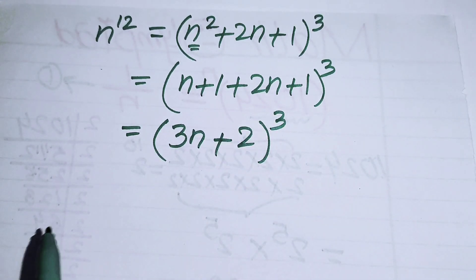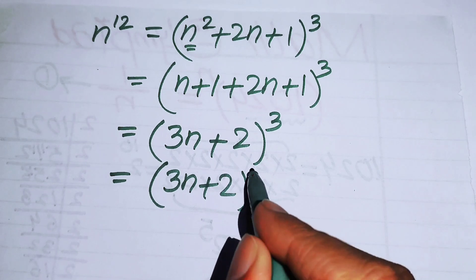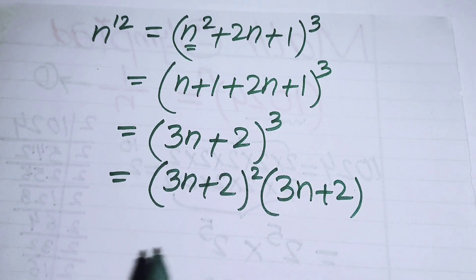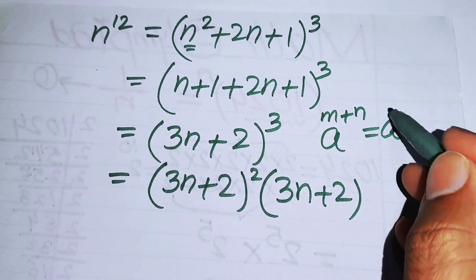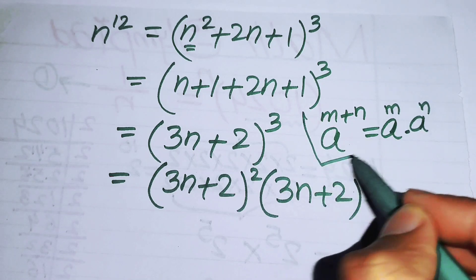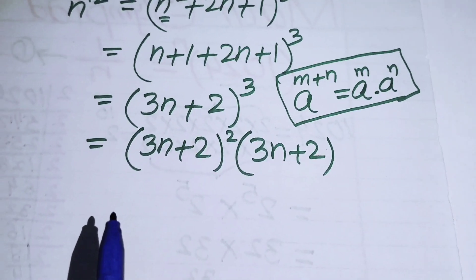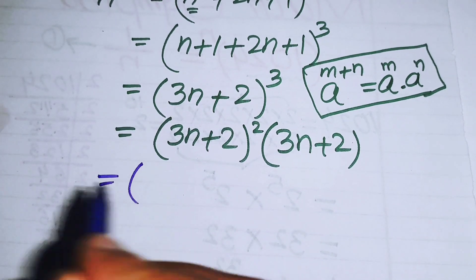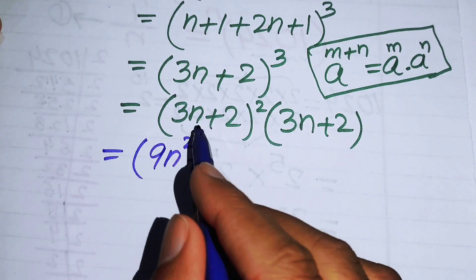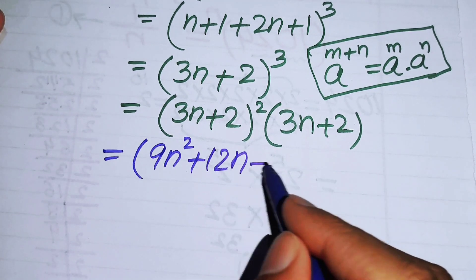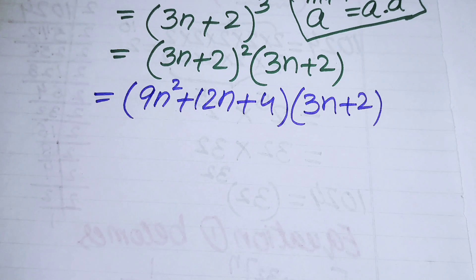We write (3n + 2)^3 as (3n + 2)² · (3n + 2), using the exponential law aᵐ⁺ⁿ = aᵐ · aⁿ. Expanding (3n + 2)² using the square identity gives 9n² + 12n + 4. So we have (9n² + 12n + 4)(3n + 2).